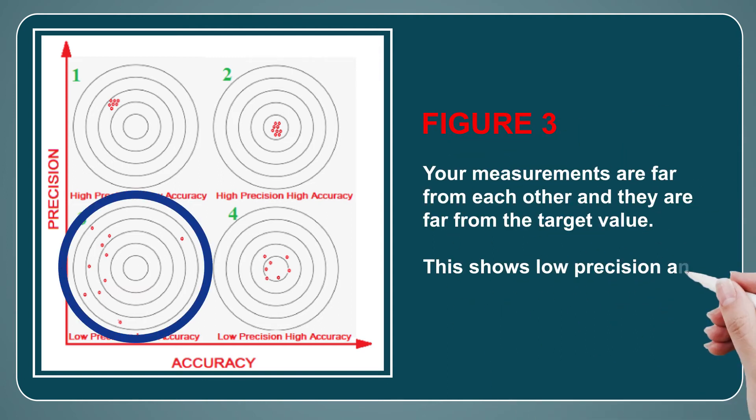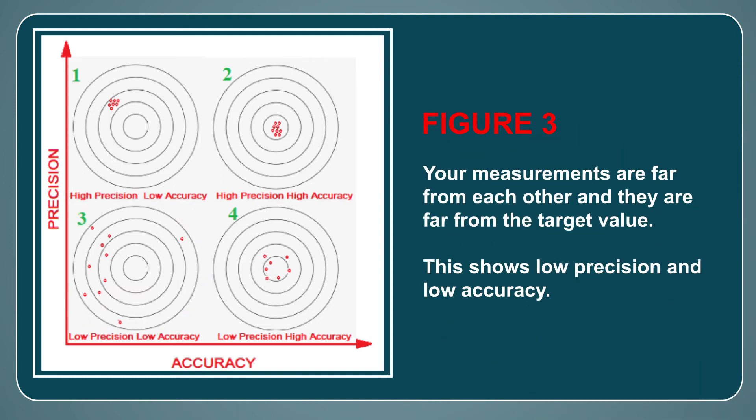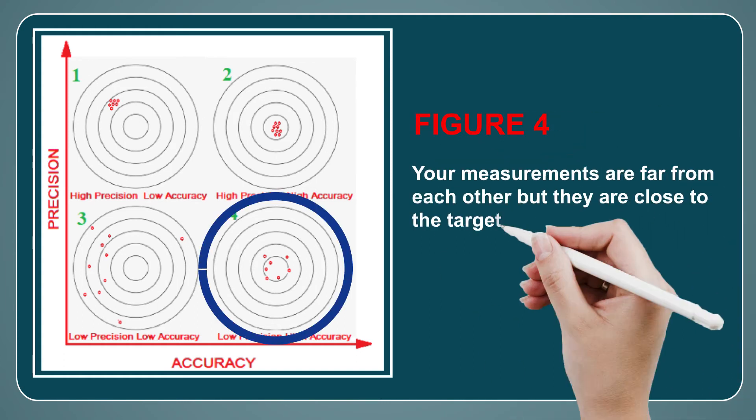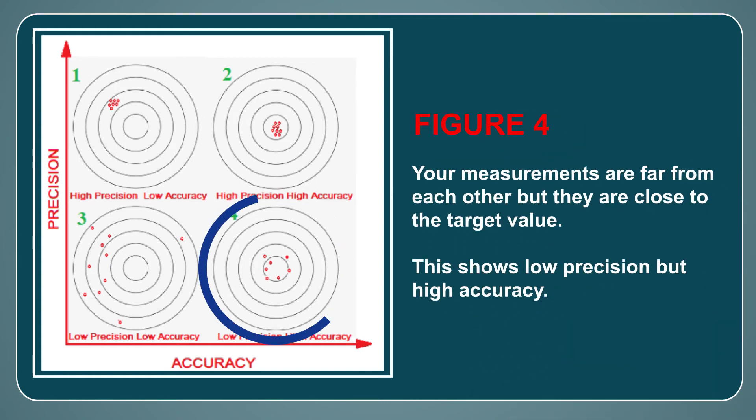Figure 3: Your measurements are far from each other and they are far from the target value. This shows low precision and low accuracy. Figure 4: Your measurements are far from each other but they are close to the target value. This shows low precision but high accuracy.